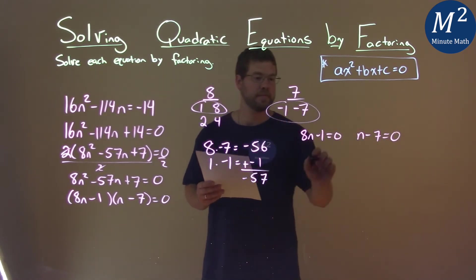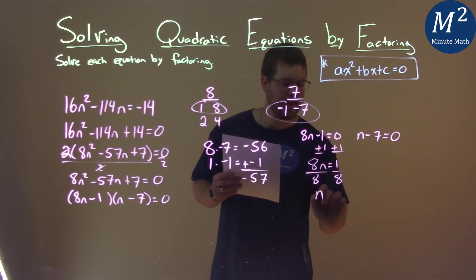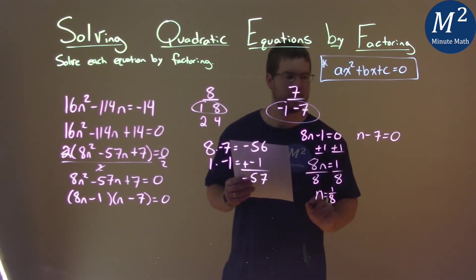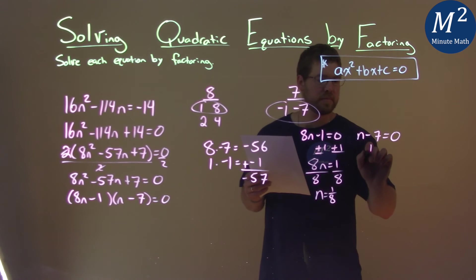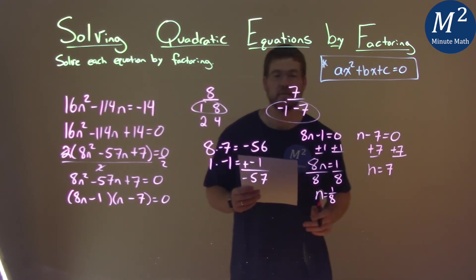Now let's solve. Add 1 to both sides. 8n equals positive 1, divided by 8, and n equals 1/8. Same thing with the second equation. I add 7 to both sides, and n equals positive 7.